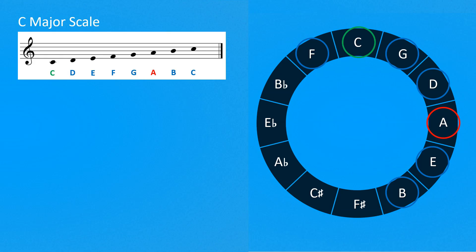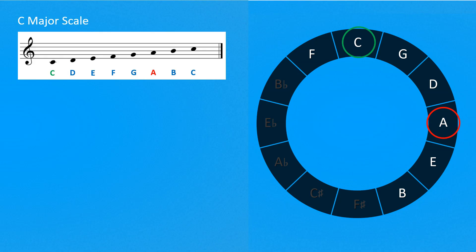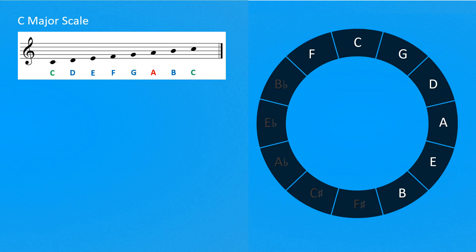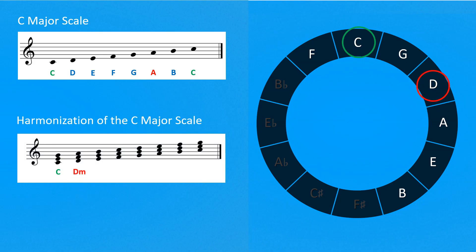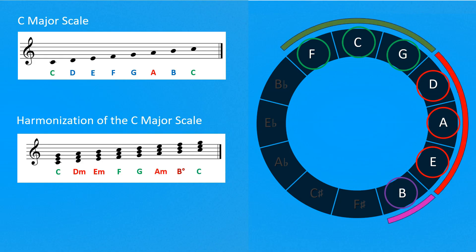The scale of A minor, which is relative to C major, has exactly the same notes with a different sequence — the first note is, of course, A. As we can see, the C major scale and the relative A minor occupy a precise part of the circle of fifths. The range of notes is between the first note to the left of the root note — in our case F — and the two notes to the right, the relative minor note A, giving us B. The harmonization of C major gives us: C major, D minor, E minor, F major, G major, A minor, B diminished, and back to C major. The major chords are near the C major chord, and the minor chords are near the A minor chord.